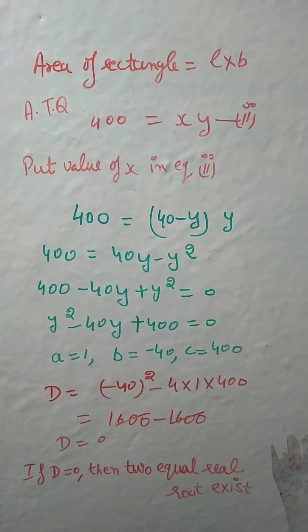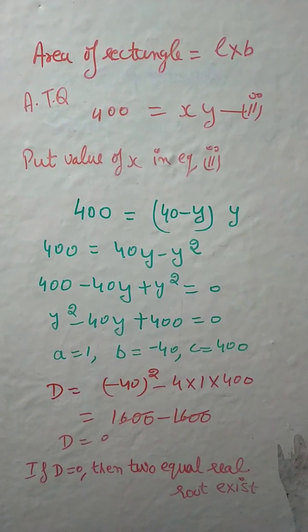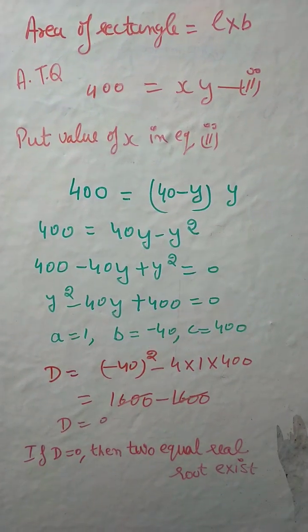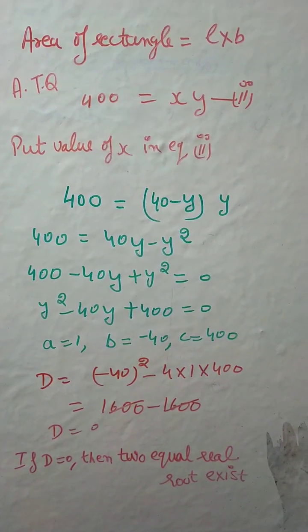We know a = 1, b = -40, and c = 400. The discriminant D = (-40)² - 4(1)(400) = 1600 - 1600 = 0. If D = 0, then two equal real roots exist.